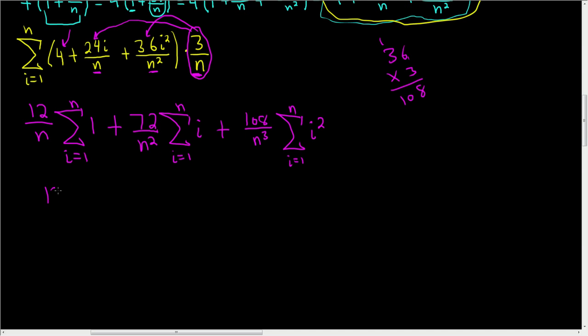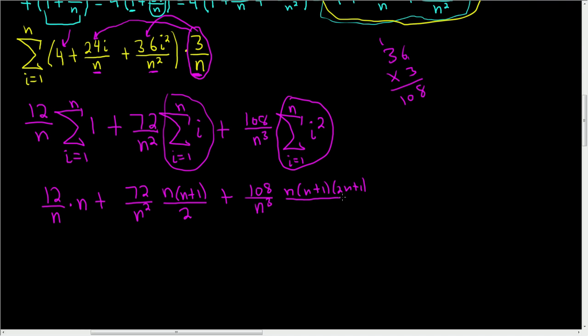So this first one is 12 over n, and then we just have n plus 72 over n squared. You have a 1, so it's just 1 times n, which is n. Here, the formula for this is n, n plus 1, divided by 2, plus 108 over n cubed. And here, the formula for this is n, n plus 1, 2n plus 1, all over 6. So I guess you do have to memorize these. I actually have them memorized. So here, you have a number, 1, so it's just 1 times n. Here, it's this formula here. And then this here is this here.